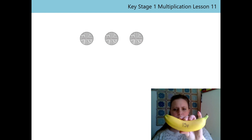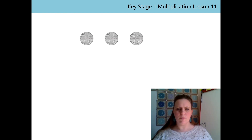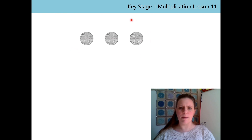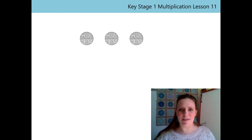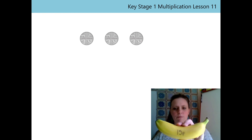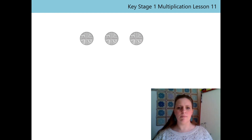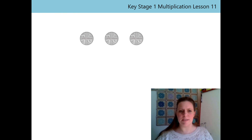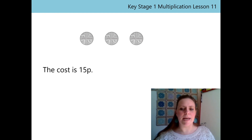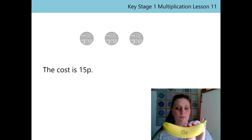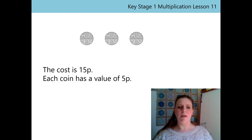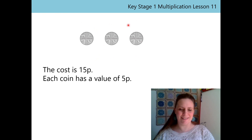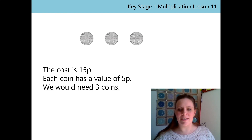My banana was 15p. How many coins have I got here? That's right, there's three. I would need three 5p coins to buy my banana for 15p. Let's review that together with the use of our stem sentences. I'd like you to say it after me: the cost is 15p. Each coin has a value of 5p. We would need 3 coins. Thanks for helping me out with that problem.